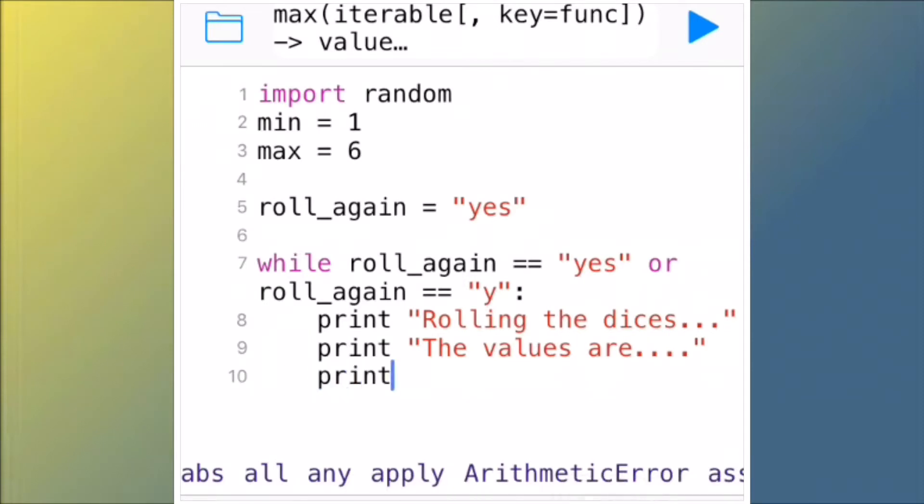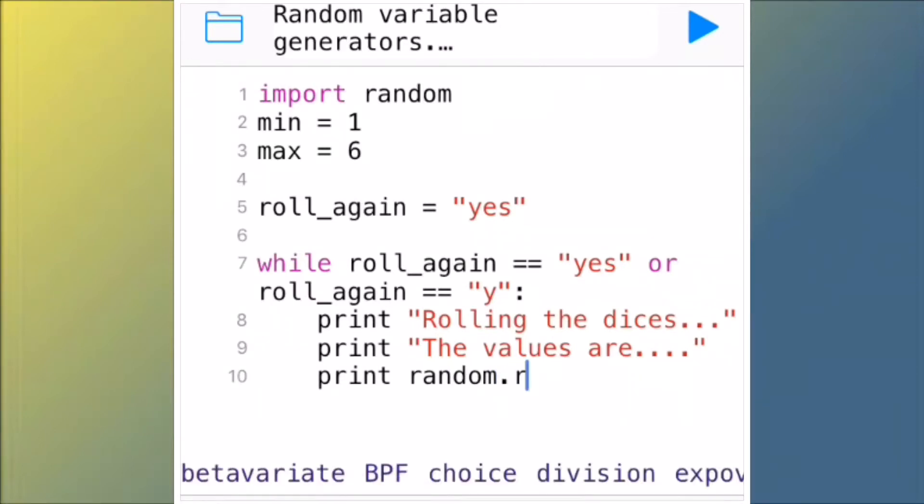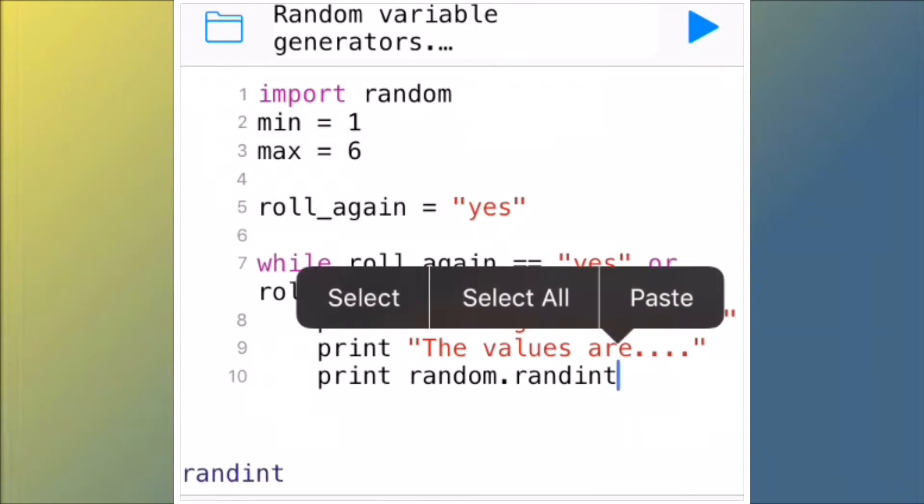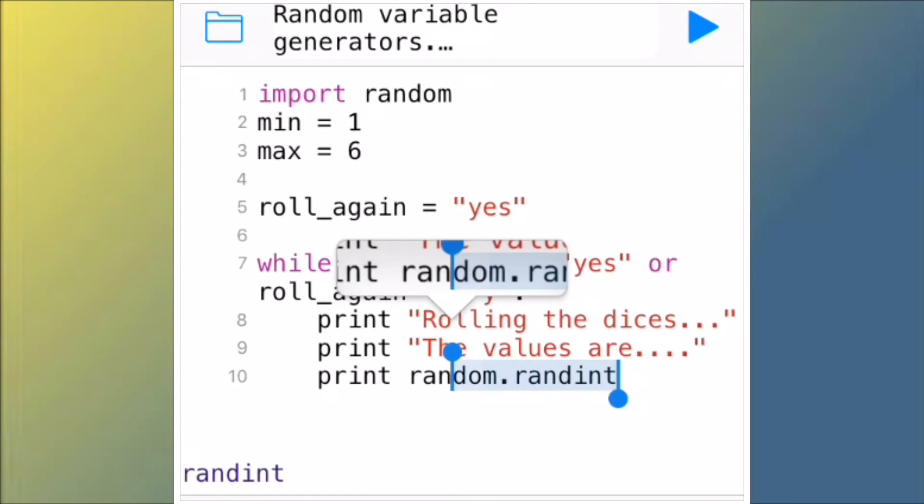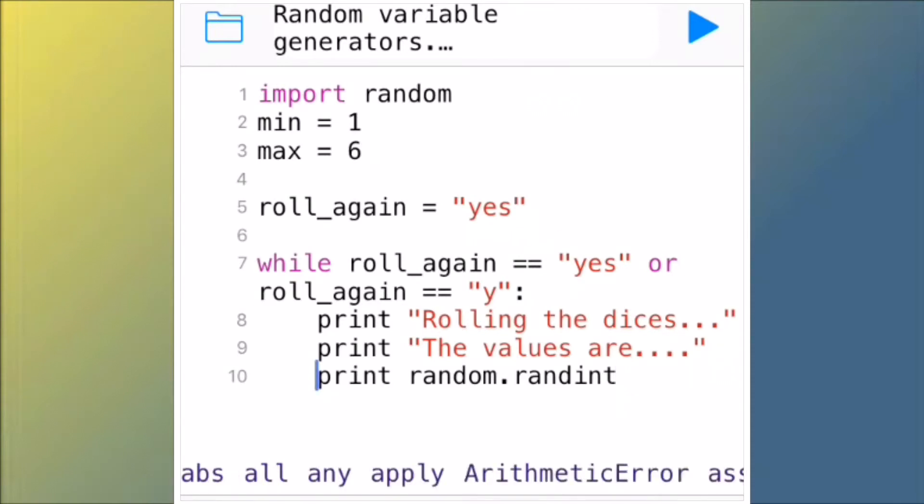Print space random dot randint - I will copy this. Just on print, copy all the way from print to random dot randint. After randint you want an open bracket, min comma space max, close bracket.